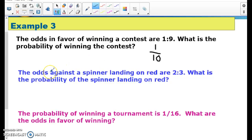The odds against a spinner landing on red are 2:3. So that means it's going to not happen two times and happen three times. So I know my denominator is going to be five. What is the probability of the spinner landing on red? That means it's going to be three out of five. Since it's odds against, it's going to be three out of five.